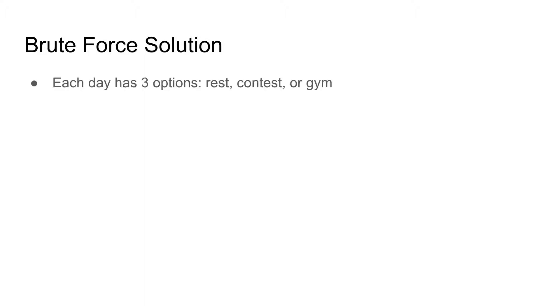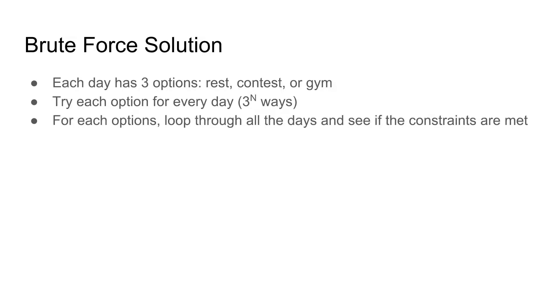Let's first consider the brute force solution. Each day we have three options: rest, contest, or gym. We try each option for every day, giving 3 to the power of n total combinations. Once we have an option, we loop through all days to check constraints, and take the one with the minimum rest days. The runtime is O(n × 3^n), which is approximately 5 × 10^49 — way bigger than 10^9. This solution is too slow and will not work.